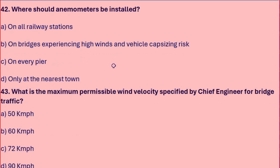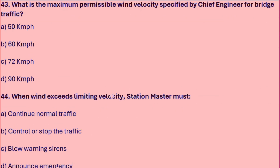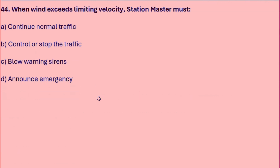An anemometer should be installed on bridges that experience high winds and vehicle capsizing risk. The maximum permissible wind velocity specified by the Chief Engineer for bridge traffic is 72 kmph. When wind exceeds the limiting velocity, the station master must control or stop the traffic.